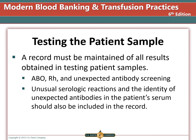When testing a patient sample, a record must be maintained of all results obtained, including ABO, RH, and unexpected antibody screening. If there are unusual serologic reactions or unexpected antibodies in the patient's plasma, this should be included in the patient's record. When a patient has an order for blood transfusion, you must always review their previous record to determine if the current testing matches previous testing and whether the patient has a history of unexpected antibodies or transfusion reactions.